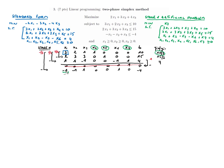With x1 entering the base, we compute the ratios to determine which variable leaves. Dividing the right-hand side values by the corresponding x1 column entries gives 10/3, 15/2, and 4/1. The smallest positive ratio is 4, so the pivot is in that row, and x4 leaves the base.